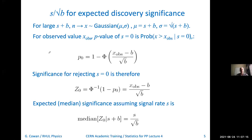If s and b are sufficiently large, I'm going to test the hypothesis that s equals zero by computing the corresponding p-value. Instead of the probability to find n greater than or equal to n observed, I'm going to use this Gaussian distributed x. Under the hypothesis of s equals zero, that's just one minus the cumulative distribution of the corresponding Gaussian with a mean of b — because I'm hypothesizing s equals zero — and therefore the standard deviation is square root of b, because this formula for sigma uses s equals zero.